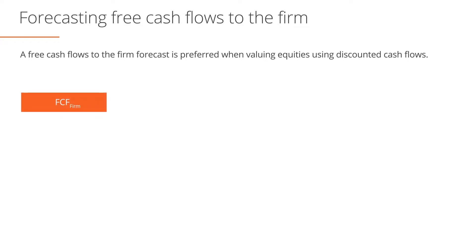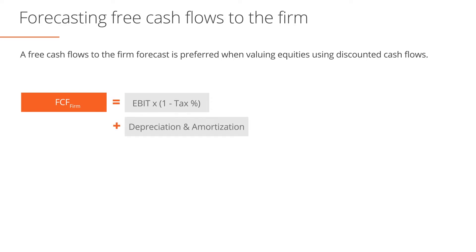Free cash flows to the firm are defined as EBIT times one minus the tax rate, where the tax rate is expressed as a percent or a decimal. Since depreciation and amortization are non-cash expenses, they are added back. Capital expenditures as well as increases in working capital are then deducted. Note that decreases in working capital would be added rather than deducted.